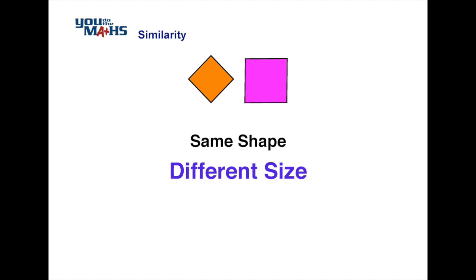These two shapes are similar because, again, if we measure every side, all the sides have been increased by the same factor, and the angles at the corners are all the same.